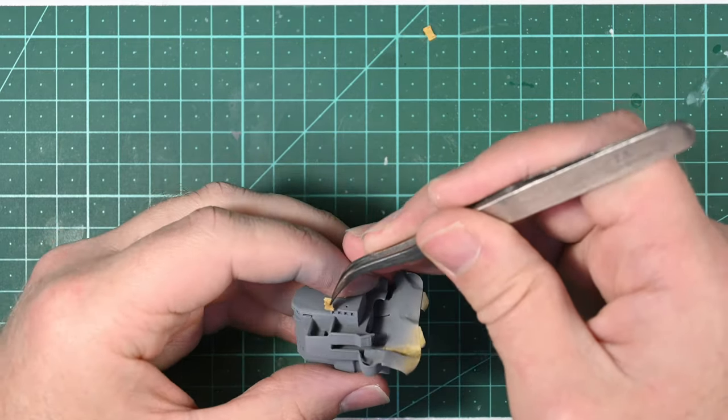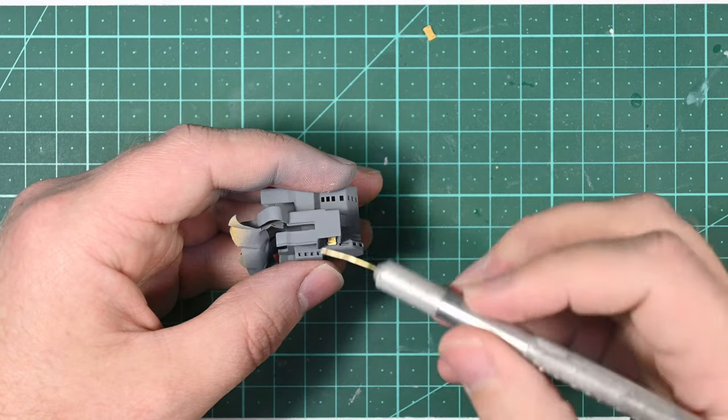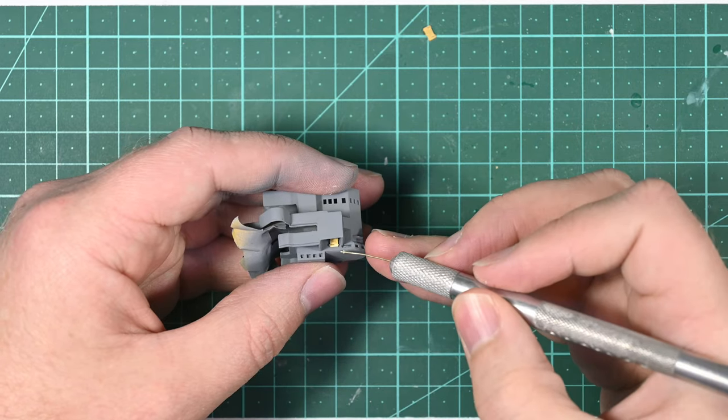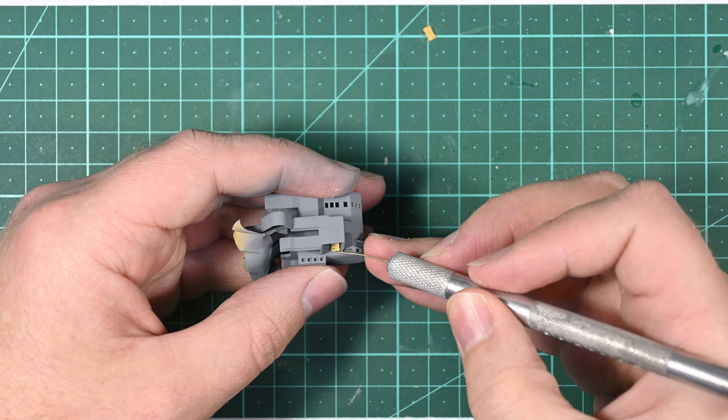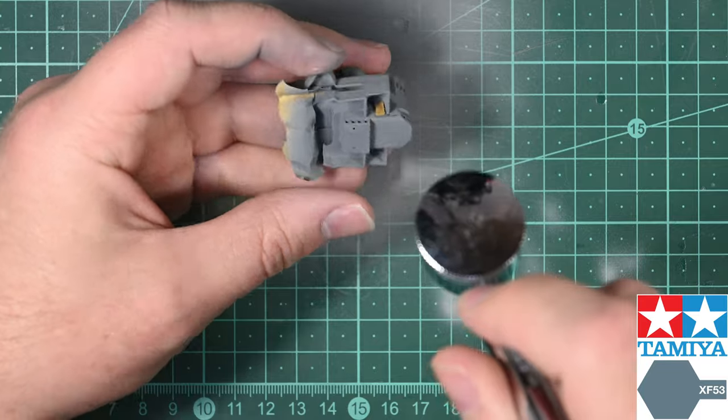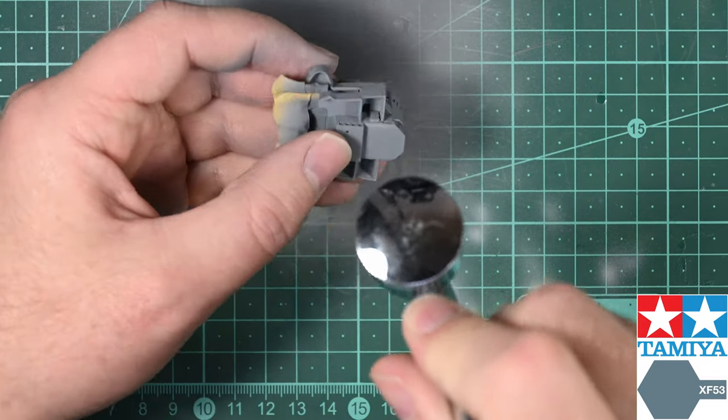I then loosely position them in the location where I want to glue them down and I glue them down using extra-thin superglue applied with a wire, following which I paint the hatches with Tamiya XF53, the color that I use to paint the rest of the superstructure.